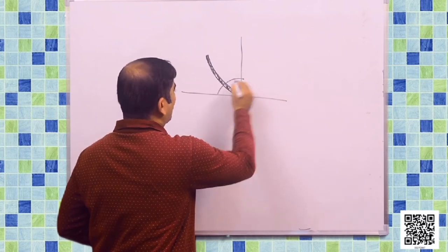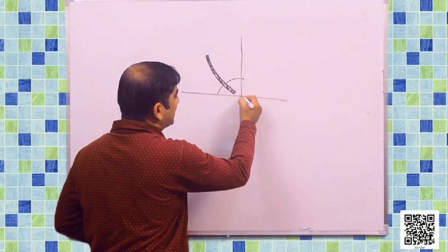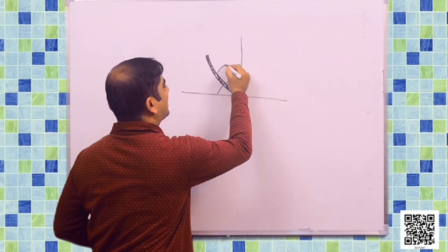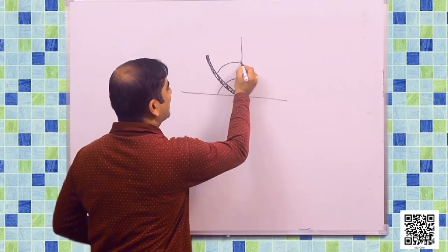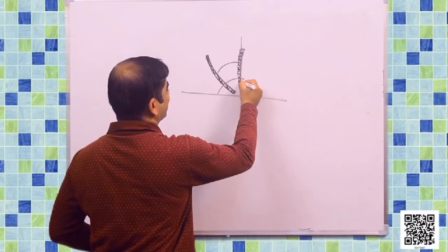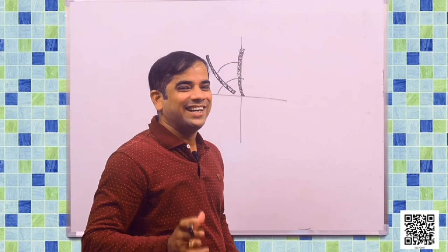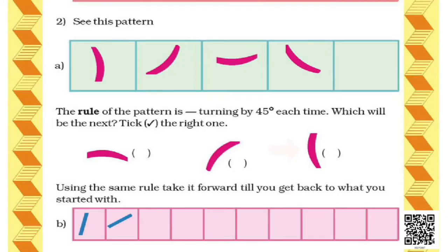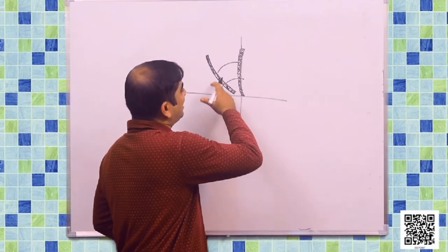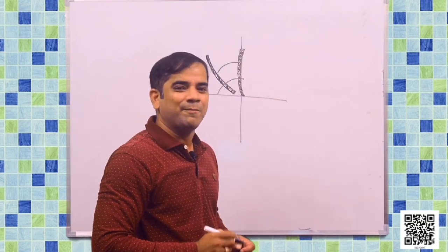Now when it continues to turn 45 degrees — that means it is now in this position, and this is 90 degrees, and half of this is 45 degrees. So it has to turn from here up to here and it will be at this position. So now you can clearly get your answer — it is option 3. So after a 45-degree turn clockwise, the picture will reach this position, which is option number 3.